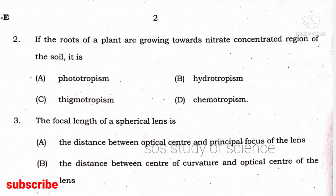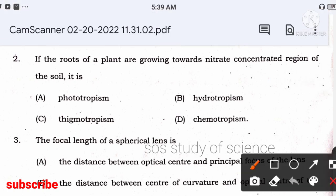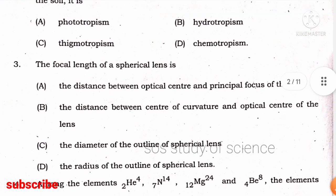Next question: if the roots of a plant are growing towards the nitrate region of the soil, what type of tropism is it? They are saying nitrate — nitrate is a chemical. So the tropic movement is called chemotropism. Anything which responds to a chemical in tropic movement is called chemo-. The right answer is option D.